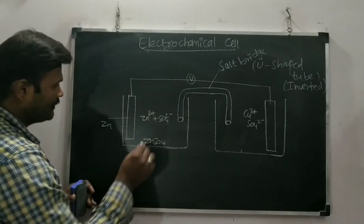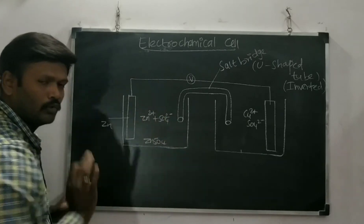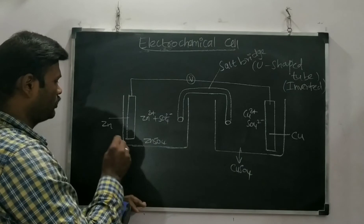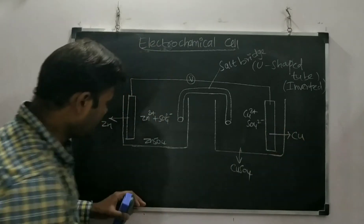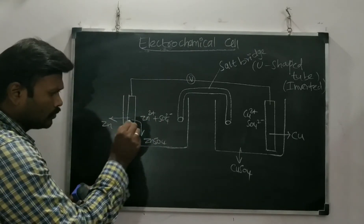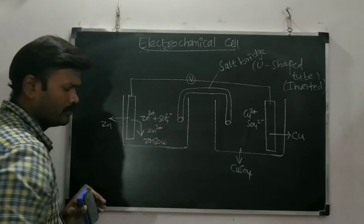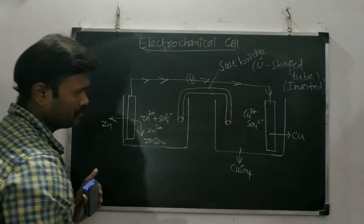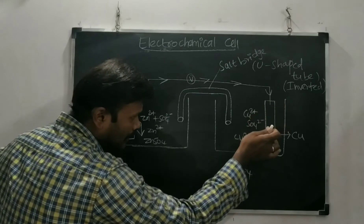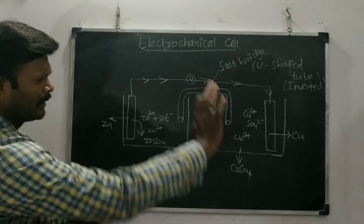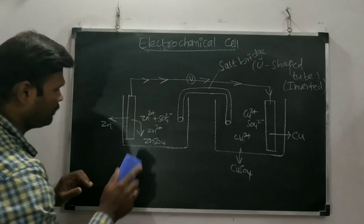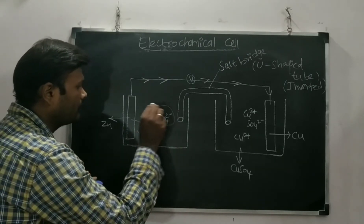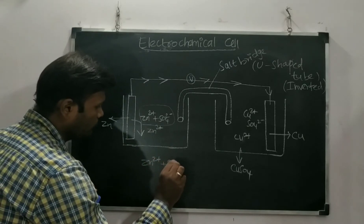Zinc sulfate dissociates as Zn²⁺ and SO₄²⁻, and copper sulfate dissociates as Cu²⁺ and SO₄²⁻. After dissociation, as zinc undergoes oxidation, we get more Zn²⁺ ions. The two electrons go and conduct the cathodic reduction reaction — Cu²⁺ absorbs the electrons coming from the anode to form copper. But suppose you are not using a salt bridge — what happens? The number of Zn²⁺ ions keeps increasing in the anodic solution.